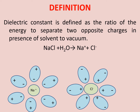तो oppositely charged ions हैं Na⁺ and Cl⁻. इस solvent की tendency, इन दोनों opposite charges को separate रखने की — उस efficiency और tendency को हम dielectric constant कहेंगे. It will be called as the dielectric constant of this solvent.